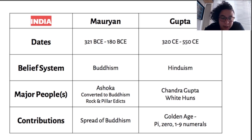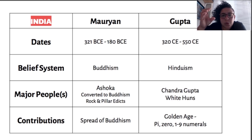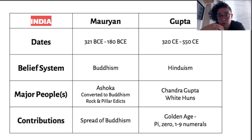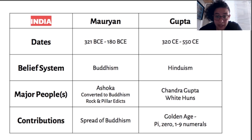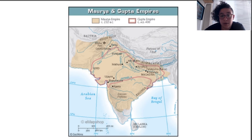The spread of Buddhism is one of the most important pieces of the Mauryan dynasty. The Gupta dynasty is considered a golden age — the actual number zero comes out of the Gupta dynasty, along with the concept of pi and other high-level mathematical innovations. The Gupta dynasty was much smaller than the Mauryan dynasty, and neither one totally conquered the entire subcontinent.